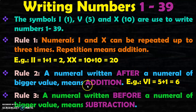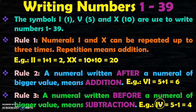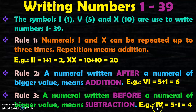Rule number three is that a numeral written before a numeral of bigger value means subtraction. So when you write I before V, which is 5, you do 5 minus 1 which equals 4. So the Roman numeral for 4 is IV. These are just rules, and once you start writing numbers applying these rules it will become easy.